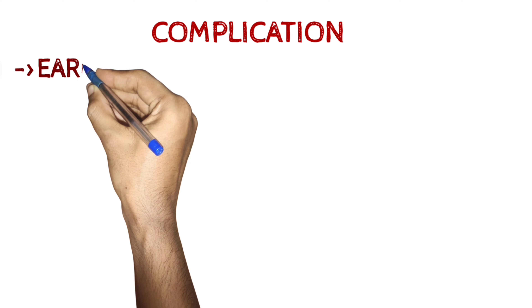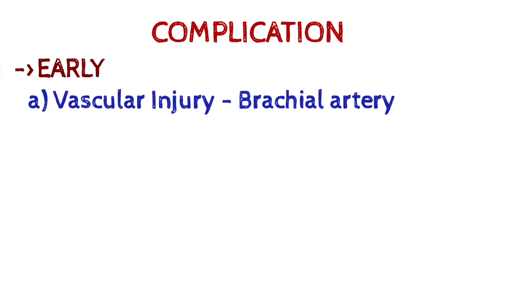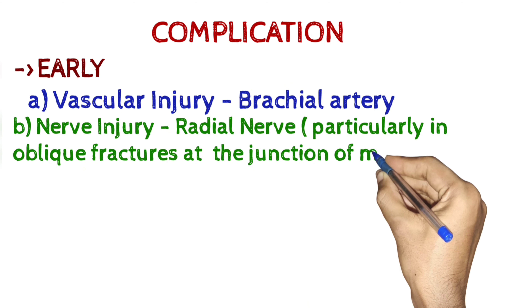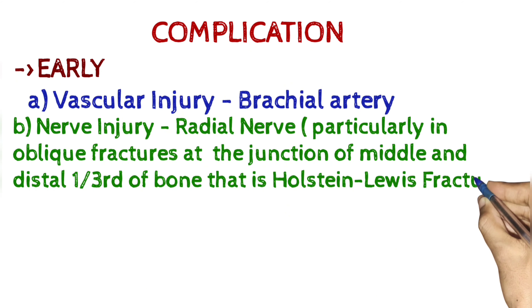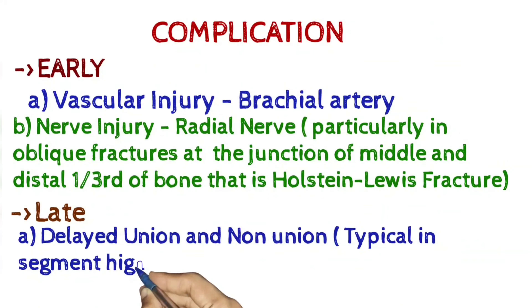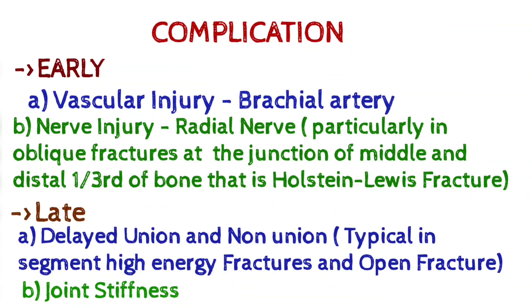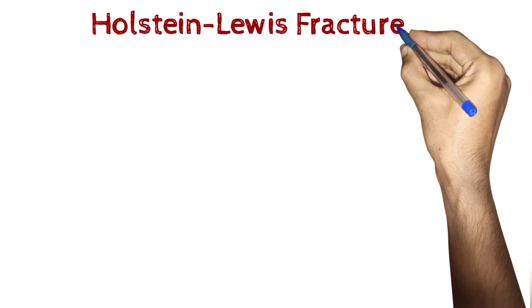Complications — Early: vascular injury to the brachial artery; nerve injury to the radial nerve, particularly in oblique fractures at the junction of the middle and distal one-third of the bone — the Holstein-Lewis fracture. Late complications include delayed union and non-union, typically in high-energy fractures and open fractures, as well as joint stiffness.